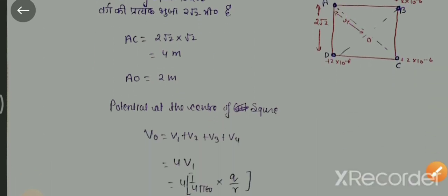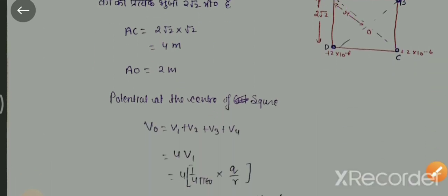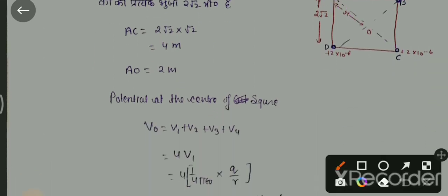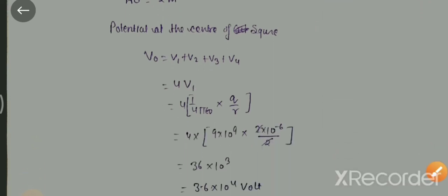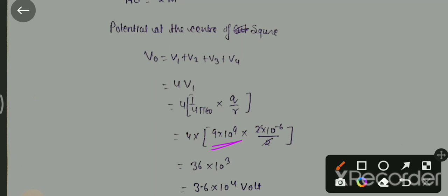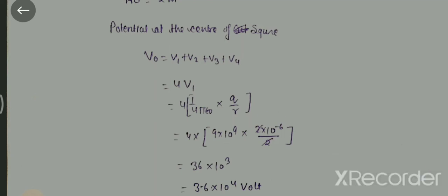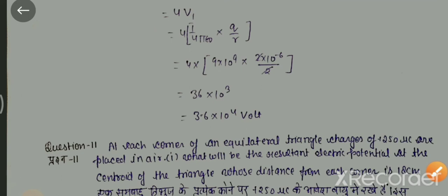अब देखते हैं। V₁, V₂, V₃, V₄ — सब same हैं, तो 4 times of V₁ होगा। 4 × (1 upon 4πε₀) × (charge upon distance) = 4 × 9 × 10⁹ × (2 × 10⁻⁶ / 2)। Total solve करने के बाद answer आता है: 3.6 × 10⁴ volt।